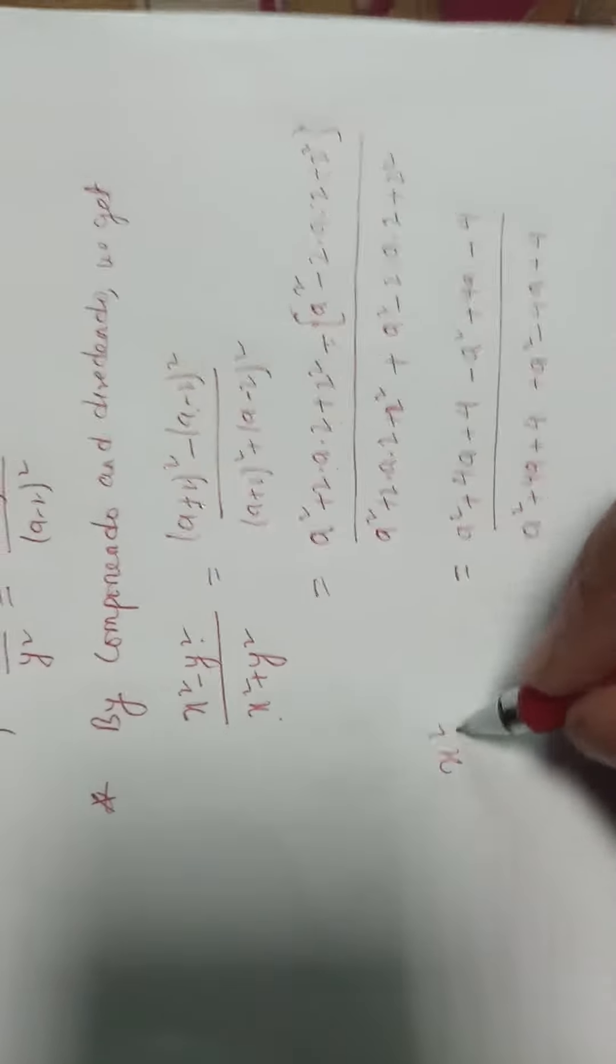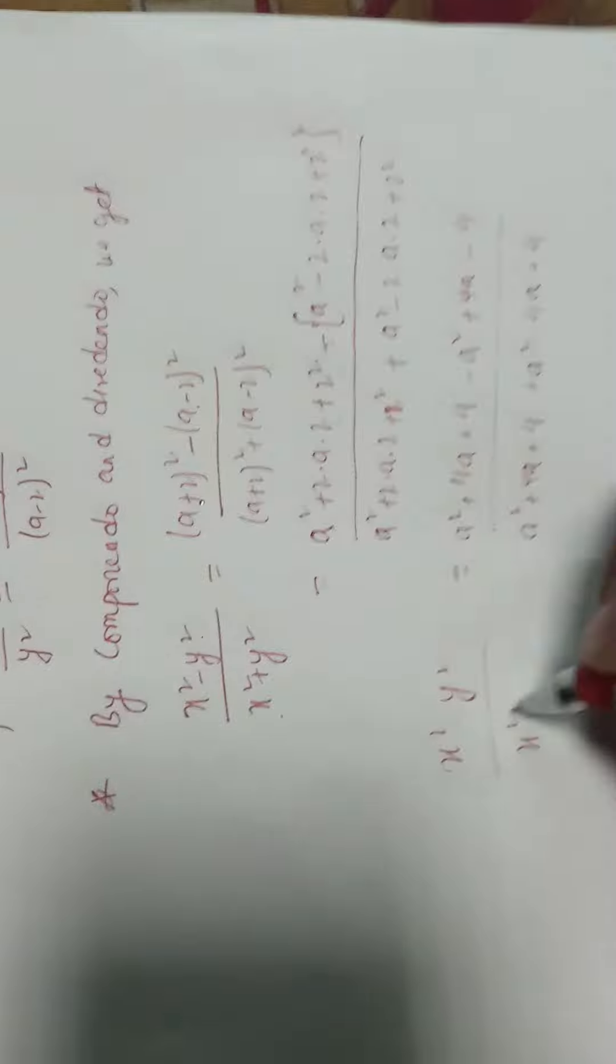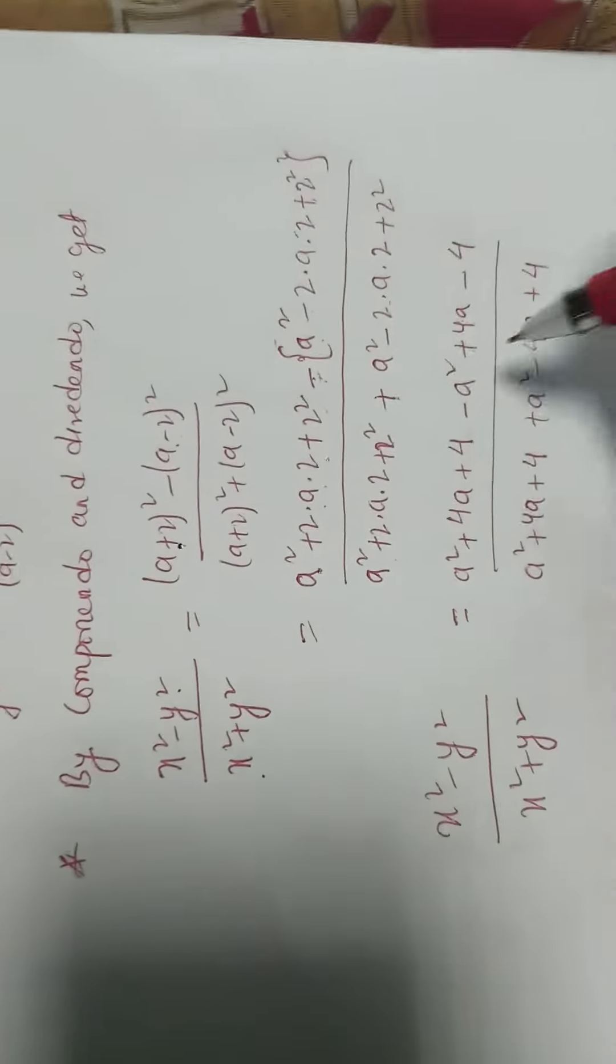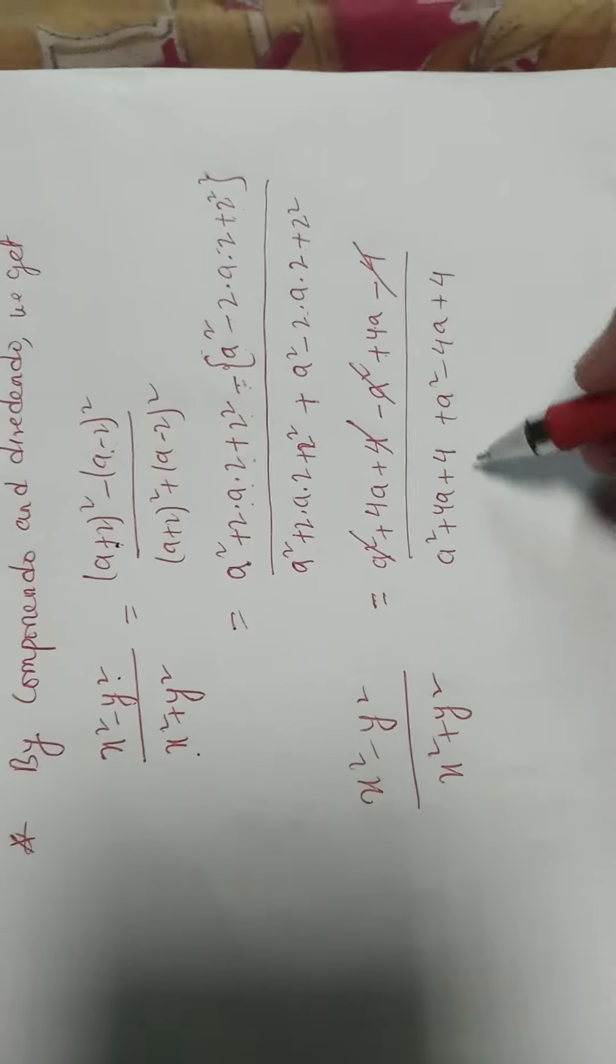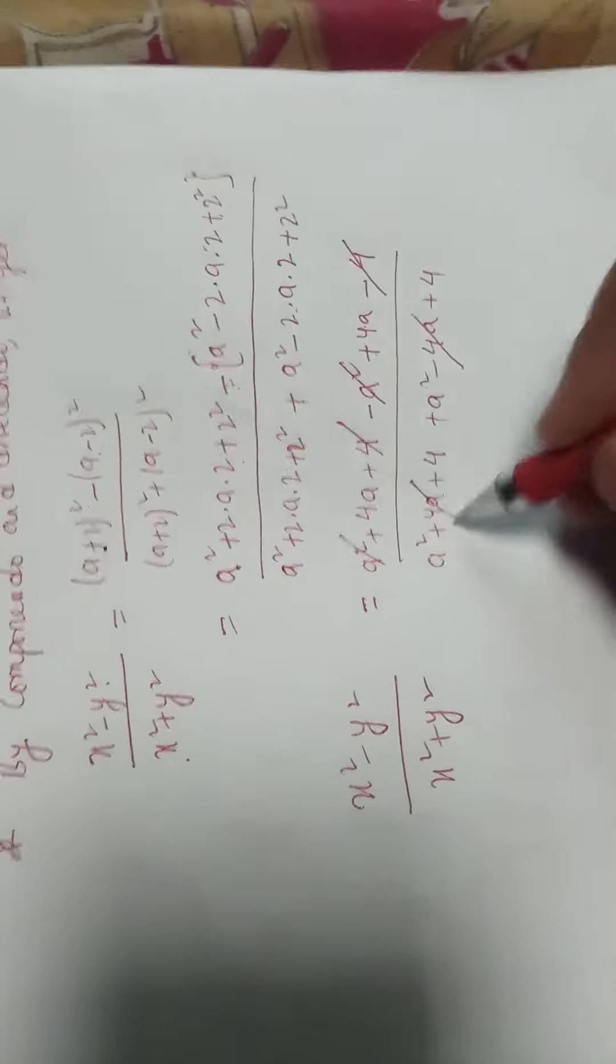Then left hand side x square minus y square by x square plus y square. Then a square, a square cut out and 4, 4 cut out and the other area is 4a cut out.